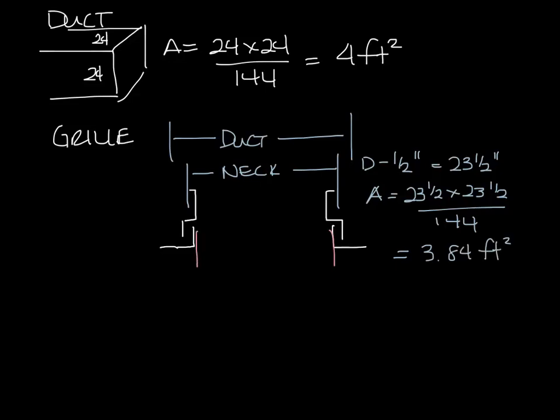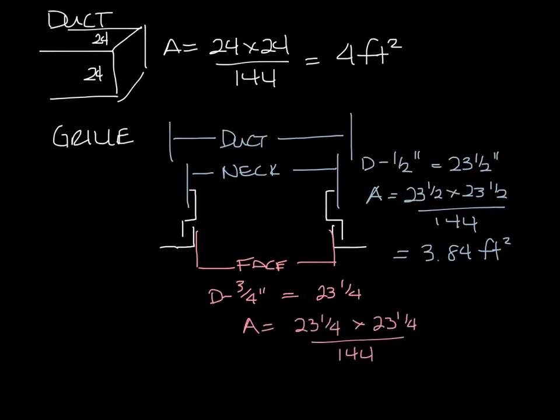But the face of the grill is a little smaller than that. It's three quarter inch smaller than the 24 by 24 dimension. So now we have 24 minus three quarters is 23 and a quarter. And so that area is 23 and a quarter times 23 and a quarter divided by 144 is 3.75 square feet.